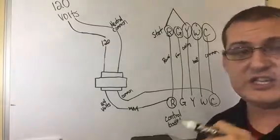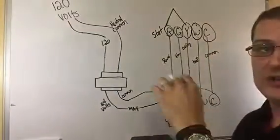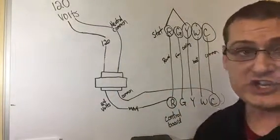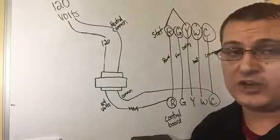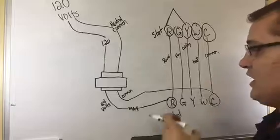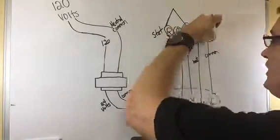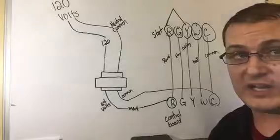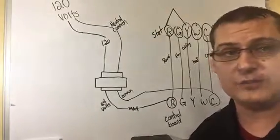You can see it just distributes the power between whatever action you're giving it. It depends on what you have it set at, depending on what the thermostat tells the wires to do. All it's doing is distributing power and then that sends it back to the furnace and the control board knows what to do from there.